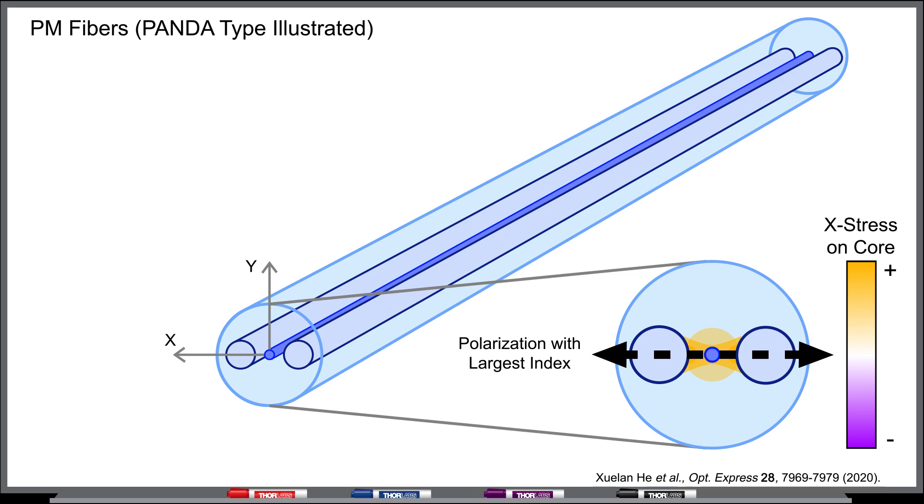This stress creates birefringence in the fiber core by increasing the refractive index along the axis that includes the stress rods, while having little effect on the refractive index along the orthogonal axis.